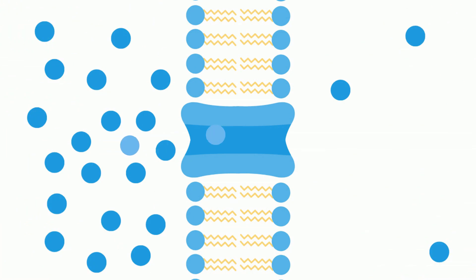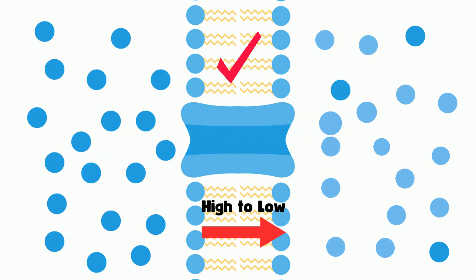Osmosis is the movement of water across a semi-permeable membrane from an area of high concentration to an area of low water concentration. This process occurs in order to equalize the concentration of water on both sides of the membrane.